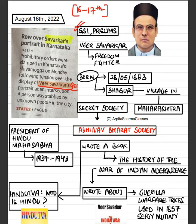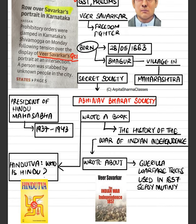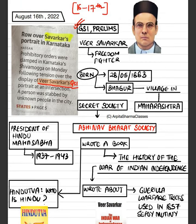Veer Savarkar is a freedom fighter who was born on 28th May 1883 in Maharashtra in the place Bhagur, which is near Nashik. He wrote a very famous book called 'The History of War of Indian Independence,' in which he wrote about the guerrilla warfare tactics that Indian soldiers used during the 1857 Sepoy Mutiny. He also wrote another controversial book known as 'Hindutva: Who is Hindu?' He also talked about the two-nation theory — one nation belonging to Hindus, the other belonging to Muslims.